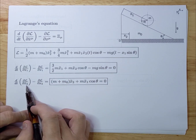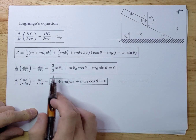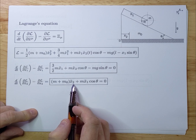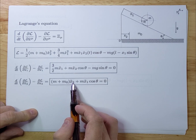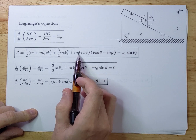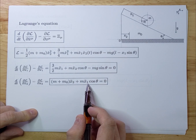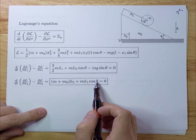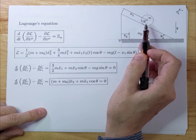We do the same for x2. Differentiating the Lagrangian with respect to x2dot gives m plus m0 times x2dot; differentiating toward time gives the second derivative. Then the cross term gives m x1 double dot cosine theta equals zero. These are the two equations of motion that describe exactly how the two objects move.